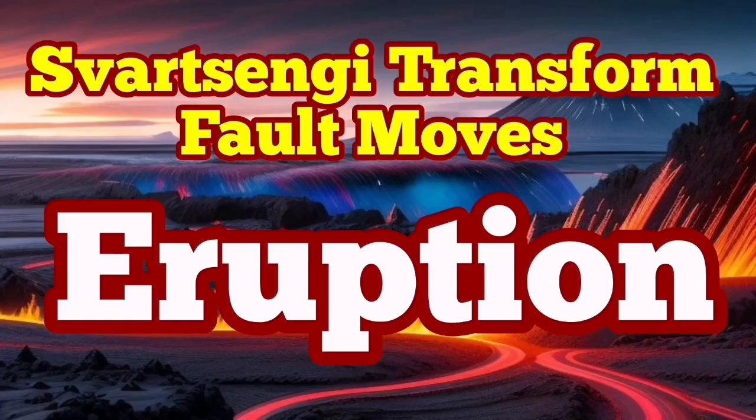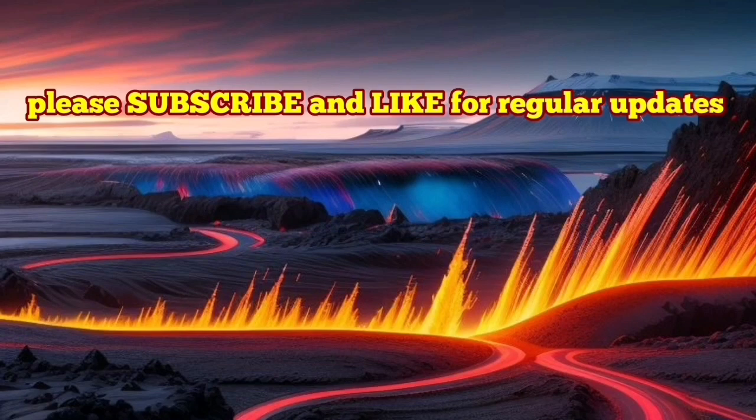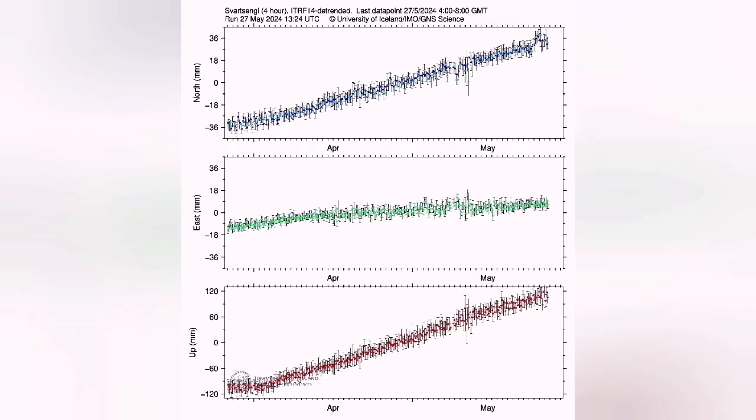Our GPS data shows now that we have around 20 million cubic meters of magma under the Svartseng volcanic system accumulated. This is based on this chart on the lower part, that one. But the north-south one also shows something strange.